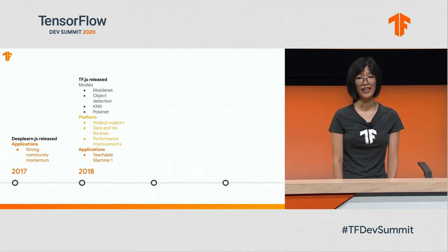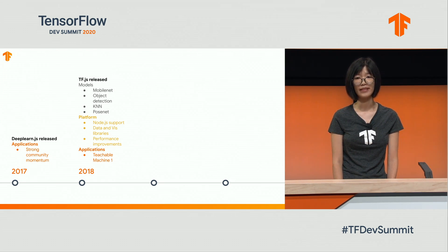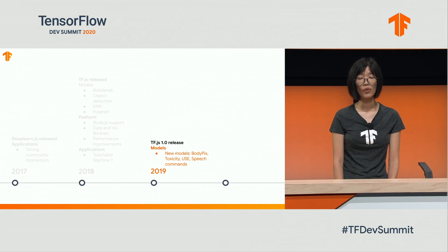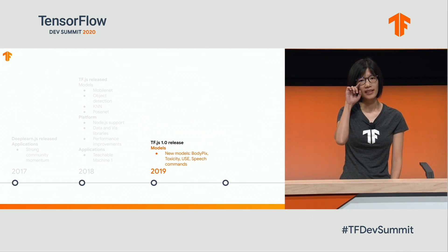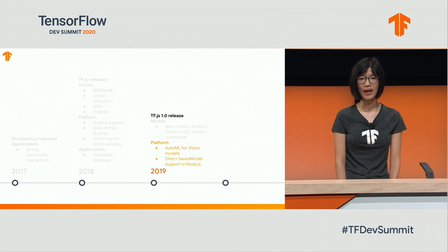TensorFlow.js was started in 2017 and launched in 2018, along with the models repo and Node.js support. This graph shows the major development milestones of TensorFlow.js. In 2019, we launched 1.0. We added four more models covering more use cases of ML, including body segmentation, toxicity detection, and sound recognition. We launched two exciting features: AutoML and direct save model support. We'll show you how ML is made easy with these new features.